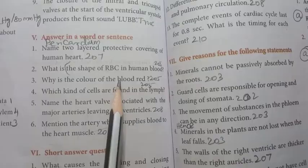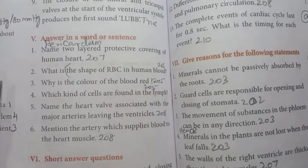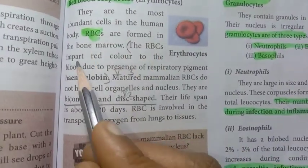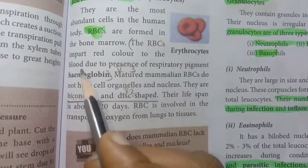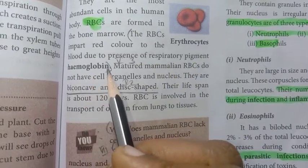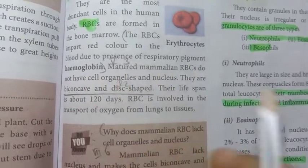Third one: why is the color of the blood red? The same page 205. The RBCs impart red color to the blood due to the presence of respiratory pigment hemoglobin. This is the fifth roman letter, third one answer.